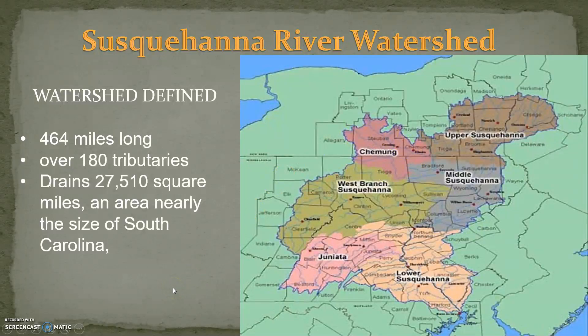This river watershed is over 464 miles long and is considered the longest river on the American East Coast that drains into the Atlantic Ocean. With its watershed, it is the 16th largest river in the United States and the longest river in the continental United States without any kind of commercial boat traffic, partly because it is so shallow and not navigable.